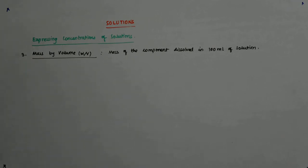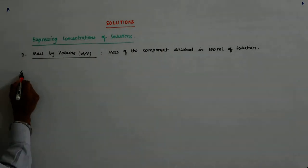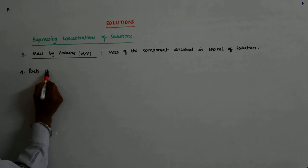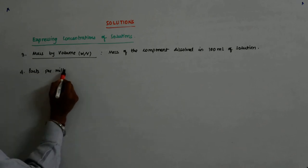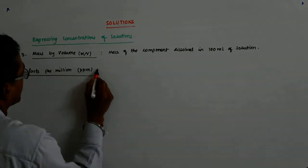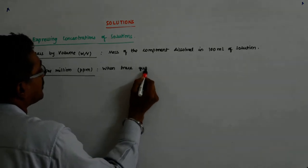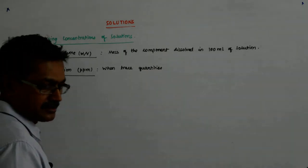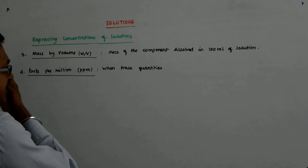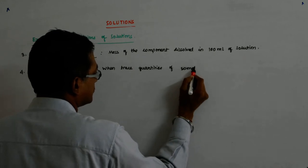Now you must have heard a thing called PPM. PPM is used when there is very small amount of certain things, parts per million, that is PPM. When very small amount of certain things are present, when trace quantities, we call it trace quantities. When trace quantities of something is present,